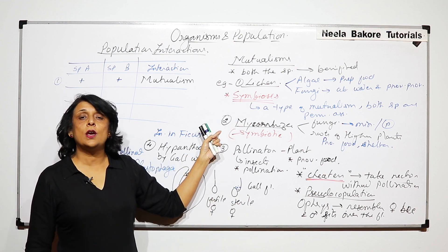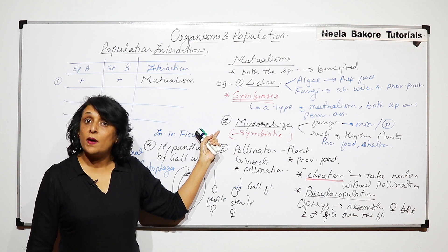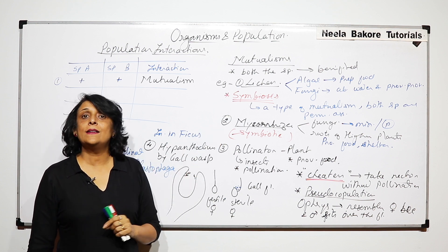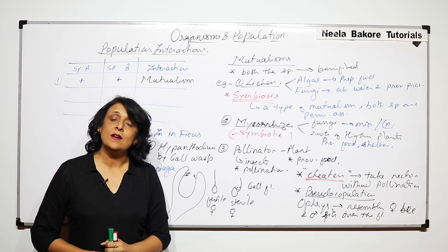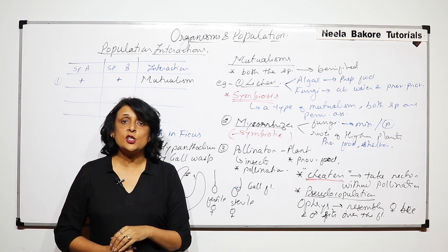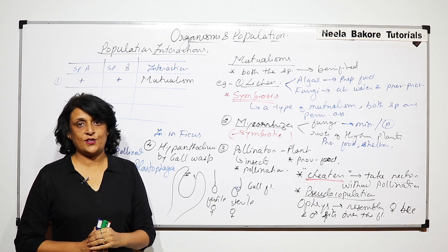But if the association between the two species is permanent, then that kind of mutualism is known as symbiotic association or symbiosis. Now, in the next part, we will take up another type of interaction.